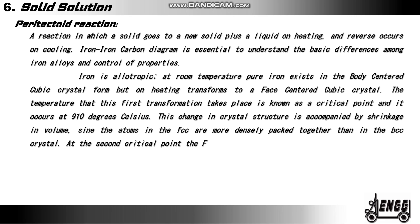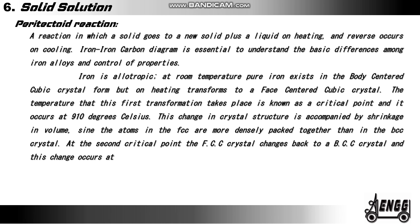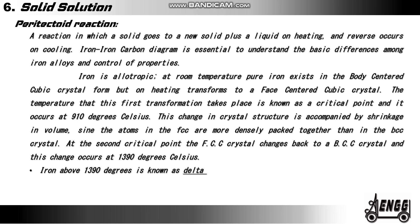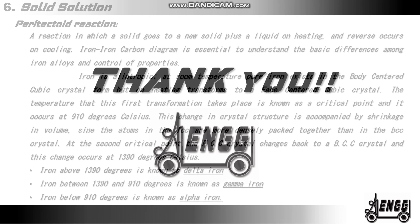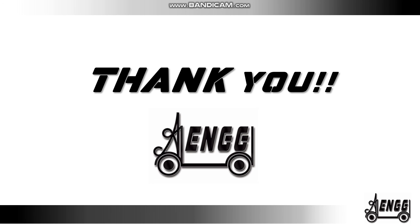At the second crystalline point, the FCC crystal changes back to BCC crystal and this change occurs at 1,390 degrees Celsius. Iron above 1,390 degrees Celsius is known as delta iron. Iron between 1,390 and 910 degrees Celsius is known as gamma iron. Iron below 910 degrees Celsius is known as alpha iron.